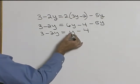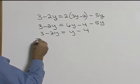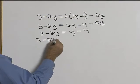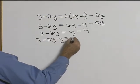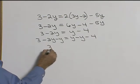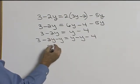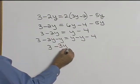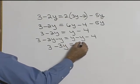Let's move our y's over. This is a positive y, so we'll have to subtract y from both sides. This gives us 3 minus 2y minus 1y, which is 3 minus 3y equals negative 4.